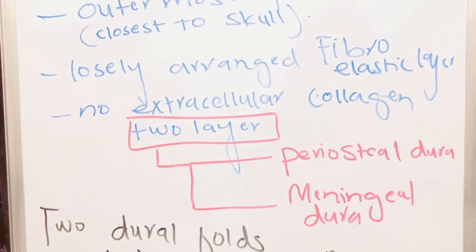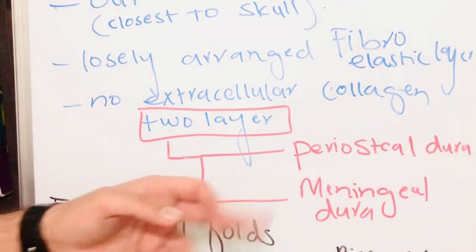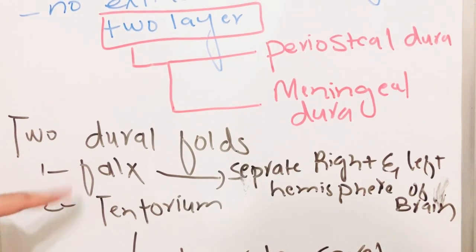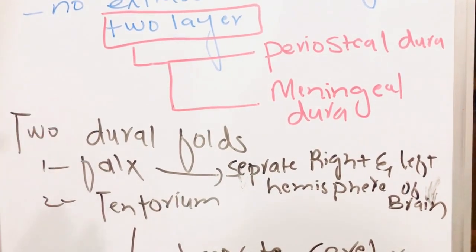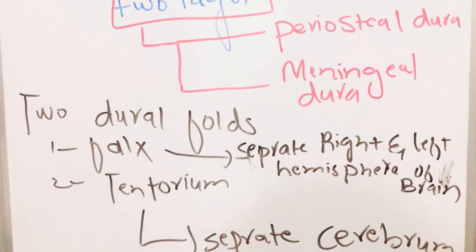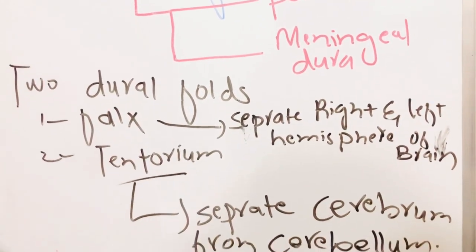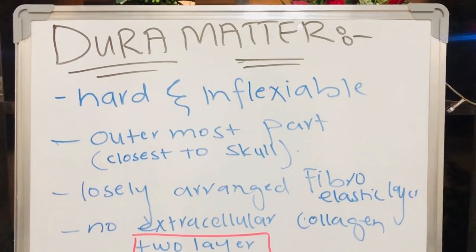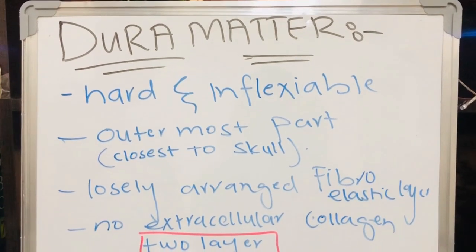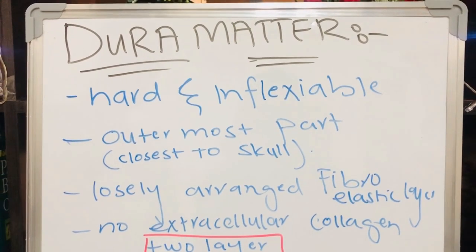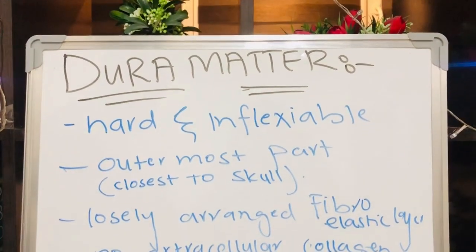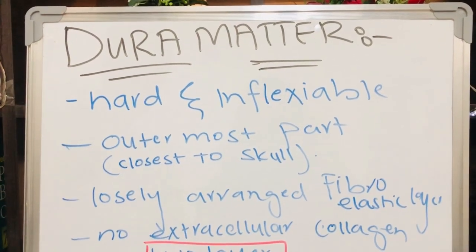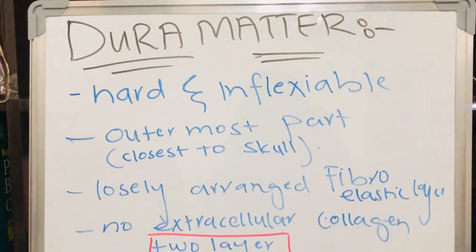Dura mater is divided into two layers: the periosteal dura and the meningeal dura. It also has two folds: the first is the falx, which separates the right and left hemispheres of the brain, and the second is the tentorium, which separates the cerebrum from the cerebellum. Dura mater forms several structures that separate the cranial cavity into compartments and protect the brain from displacement. The falx cerebri separates the hemispheres of the cerebrum and also separates the lobes of the cerebellum.